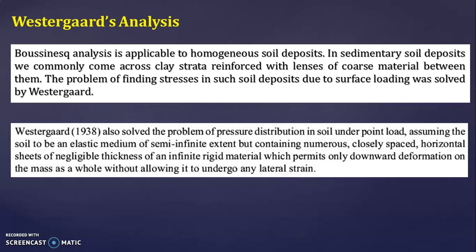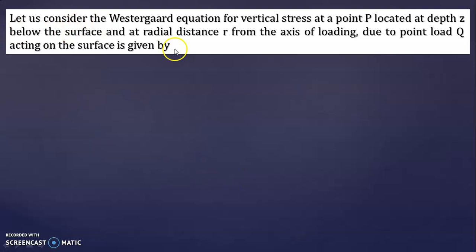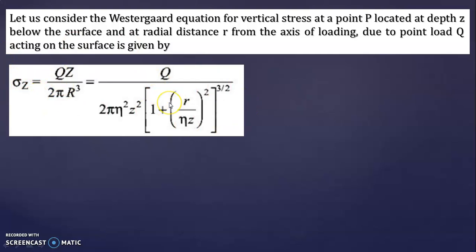These are the assumptions of Westergaard's theory. Now let us see the Westergaard equation for vertical stress at a point P located at depth Z below the surface and at radial distance R from the axis of loading. Due to point load Q acting on the surface, the formula is: sigma Z (vertical stress) is equal to Q·Z divided by 2π into R_Q.